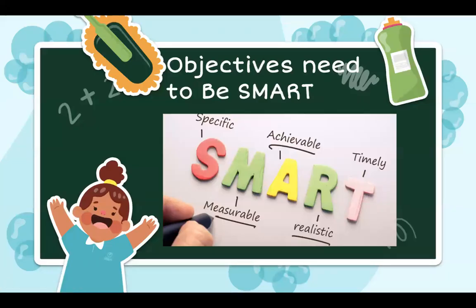The objectives we need to know should be SMART. When we speak the term SMART, it is an abbreviation — Specific, Measurable, Achievable, Realistic, and Time-specific (or Timely). SMART objectives define what a business wants to achieve in clear, structured terms.